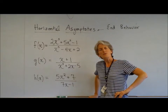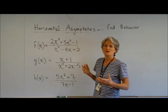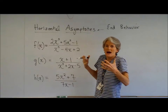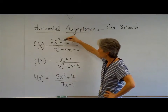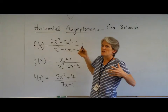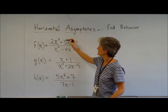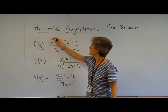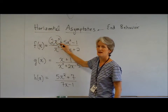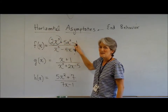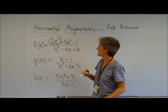If you remember when we talked about end behavior, we always looked at the controlling terms, because those are the powerful guys. Mr. Haas, in the numerator of F of X, who would you say is the controlling term? It's got to be that 2X cubed term, for sure. Exactly. I mean, if I'm plugging in a million or a billion, that little 5X squared minus 1 is kind of ineffective. It's like a little flea on an elephant.